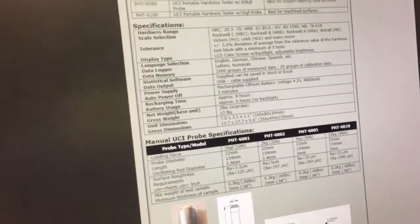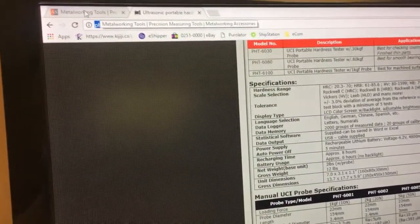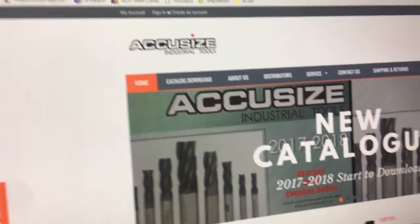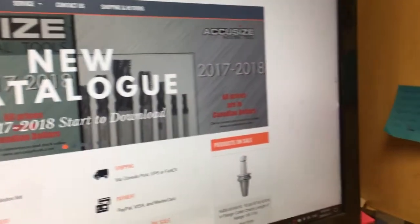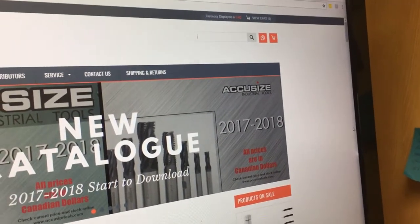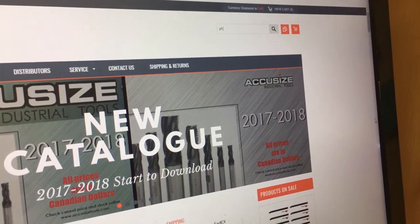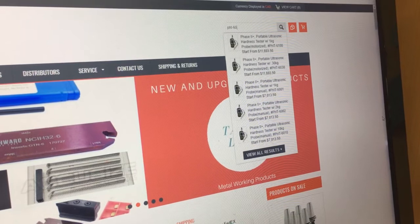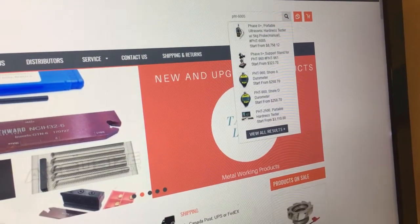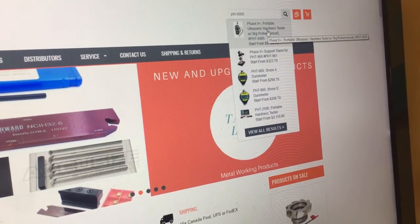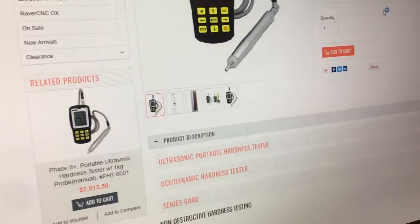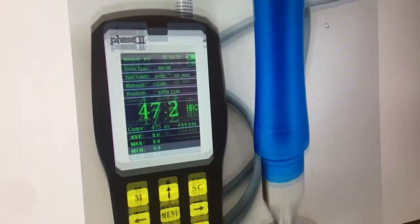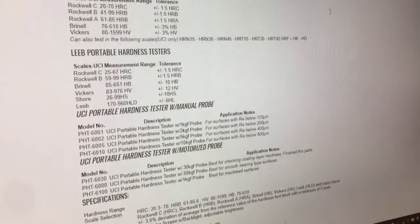And for more product information, please go to AccusizeTools.com. And on the upper right corner, you can search for whatever you want. For example, in our case, we're using PHT-6005. And the first one, that's the product we're covering today. So click it, you can see many detailed information. And also, you can complete your purchase on this website. Thank you.